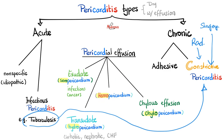Blood can be seen in cases of trauma, aortic dissection, or ruptured aortic aneurysm. If the thoracic duct is injured, you get chylopericardium. To differentiate between transudate and exudate, refer to the exudate vs. transudate pleural effusion criteria — the same criteria can apply for pericardial effusions.